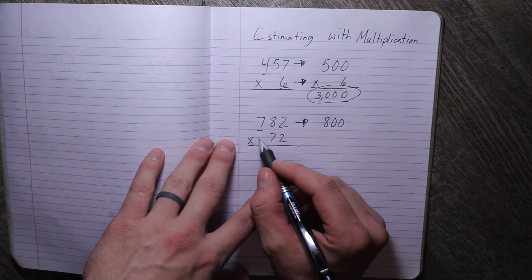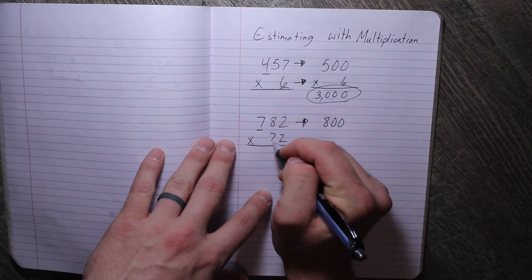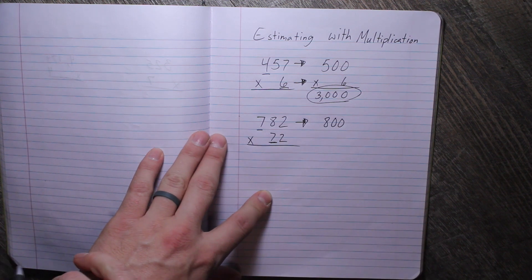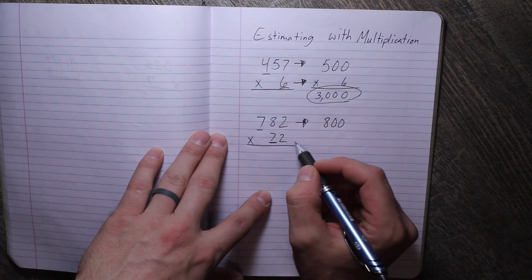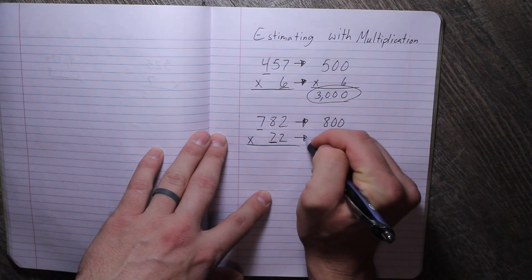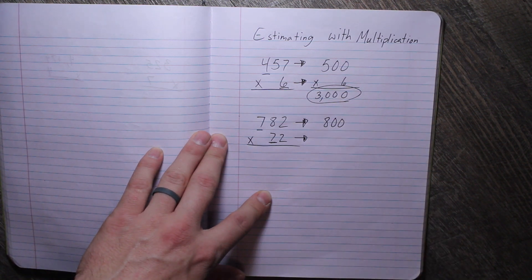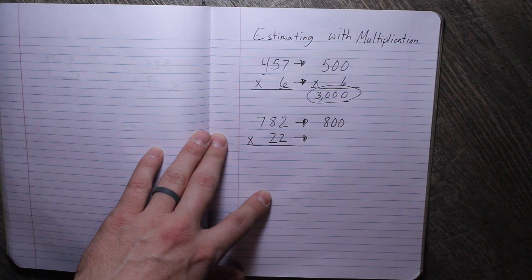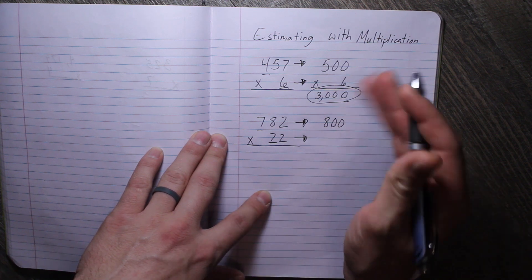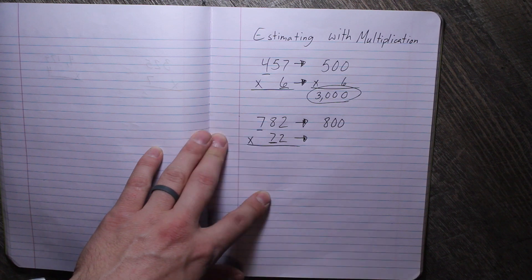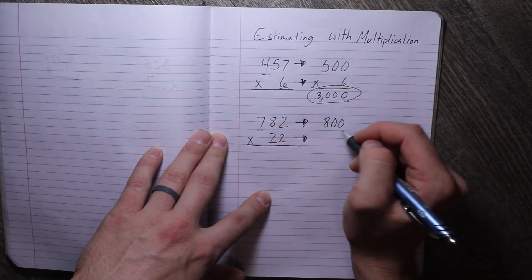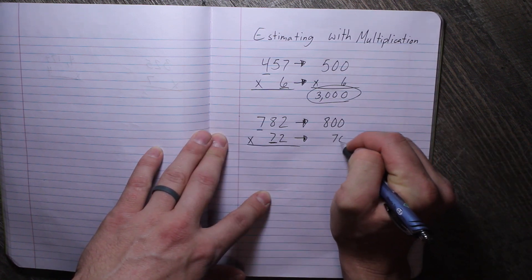Now this one, we aren't going to round to the hundreds place. We are going to round to the tens place. The largest digit is in the tens place. So is 72, is it closer to 70 or is it closer to 80? Well this one is less than 75, which is halfway between 70 and 80. So we're going to round this one down to 70.